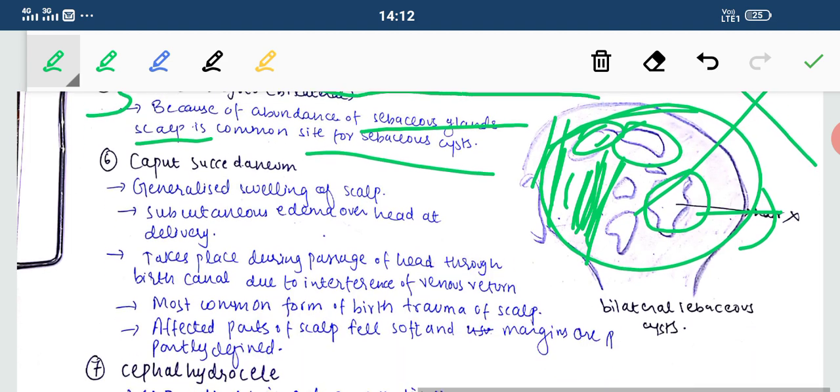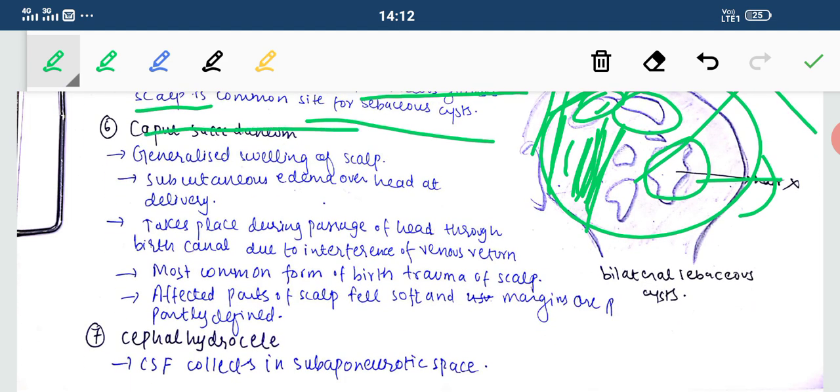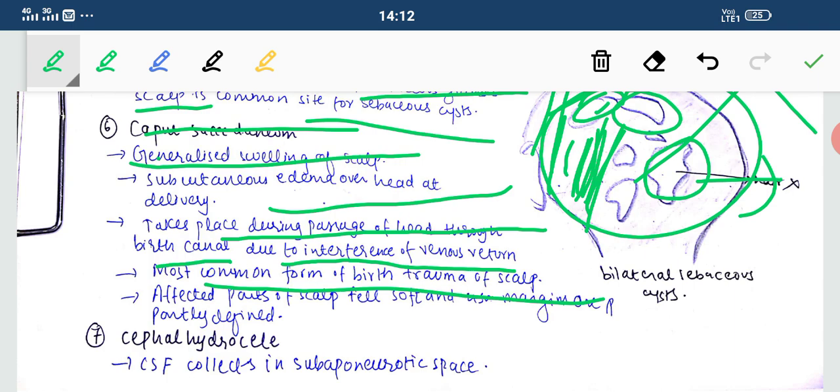The sixth one is caput succedaneum. It is generalized swelling of the scalp, subcutaneous edema over the head at the time of delivery. When delivery occurs, the skull or head is the part that comes first when the baby is delivered. During that time, some injury on the head causes swelling. This generalized swelling of the scalp during delivery is called caput succedaneum. This takes place during passage of the head through the birth canal due to interference of venous return. It is the most common form of birth trauma of the scalp. Affected parts of the scalp are felt soft, and the margins are poorly defined.